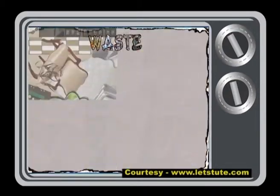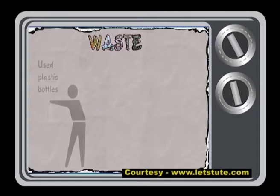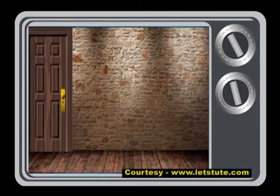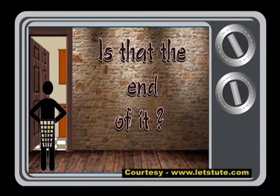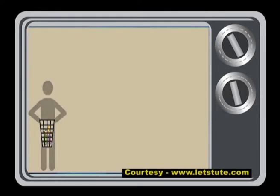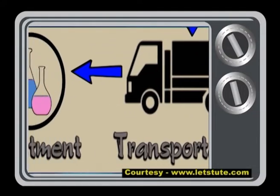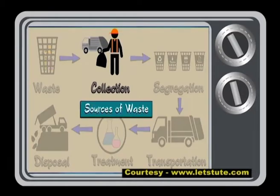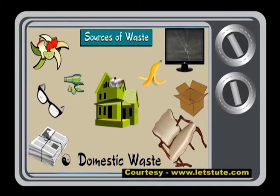This waste can be as small as a used pen to as large as an old vehicle. Also, waste to one person may not necessarily be waste to another. We normally get rid of the waste generated at homes by keeping our bins outside the house, right? But is that the end of it? No. These wastes undergo a series of processes — right from its collection, segregation, transportation; some wastes are even treated and then finally disposed of. So let's see the various places of origin from where the waste can be collected.